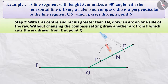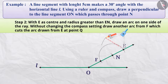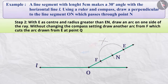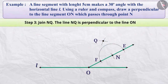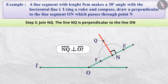Step 2. Place the pointed end of the compass on E and with a radius greater than E-N, draw an arc on one side of the ray. Without changing the compass setting, draw another arc from F which cuts the arc drawn from E at point Q. Step 3. Join the line N-Q passing through points N and Q. The line N-Q is perpendicular to the line O-N.